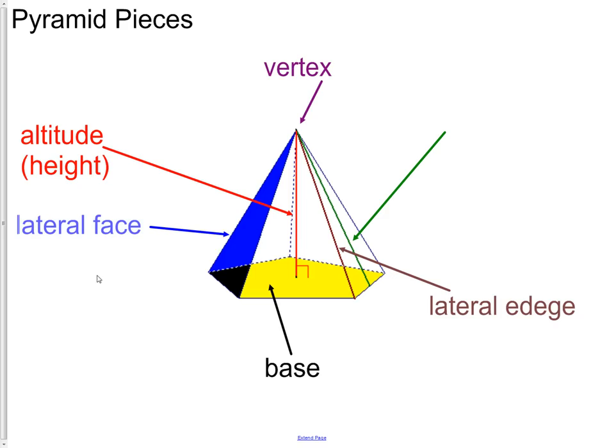Then along with that, we have our lateral faces, which would be the blue colored triangle here. And on this triangle, since it is a pentagon, we have five lateral faces.